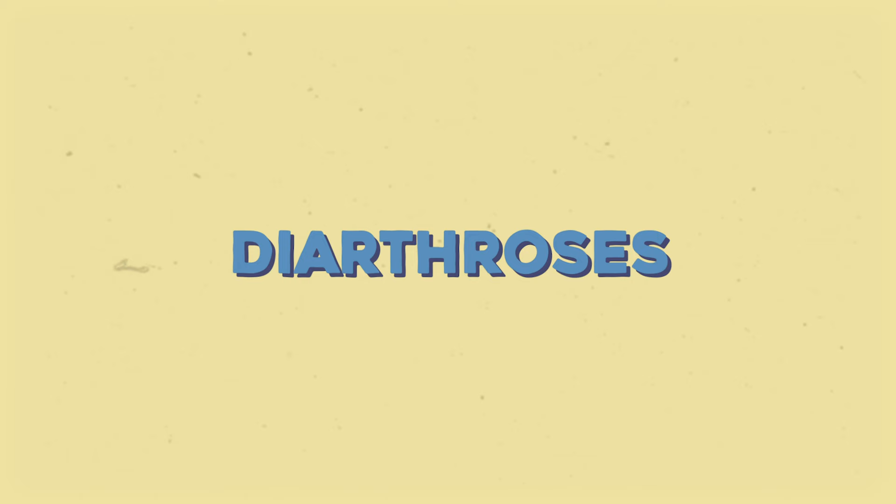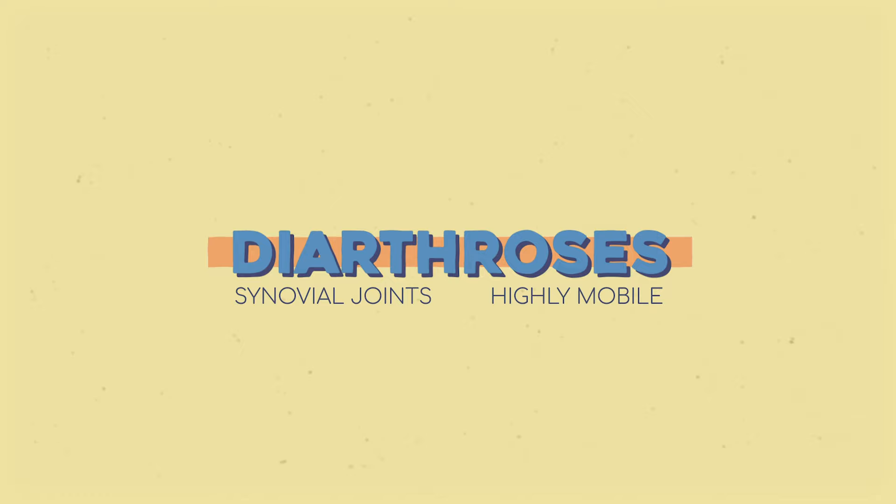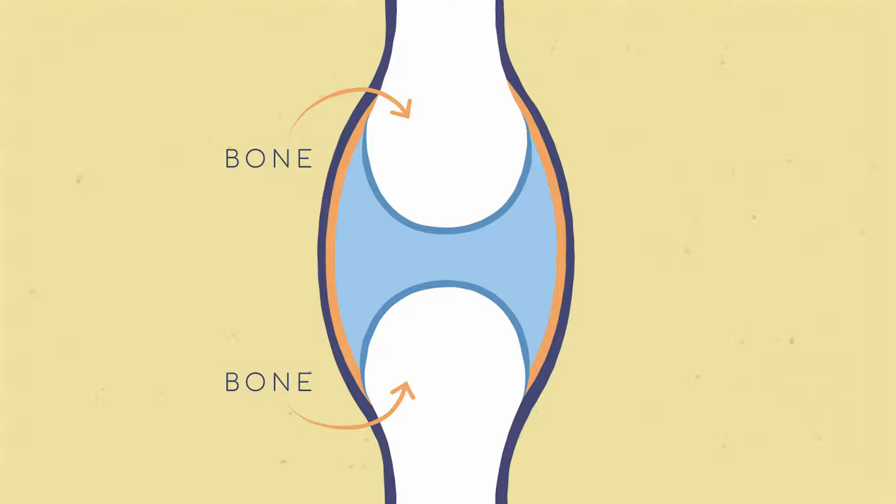When you talk about joints in your day to day, you're probably thinking of diarthroses, also called synovial joints, the most mobile type of joint. Usually you'll see it represented like this at first because each of the six joint types are so different — the picture just says here are the two bones and here's the stuff around them. Modify according to whatever bones you're looking at; it could just as easily show a ball-in-socket or a saddle joint.